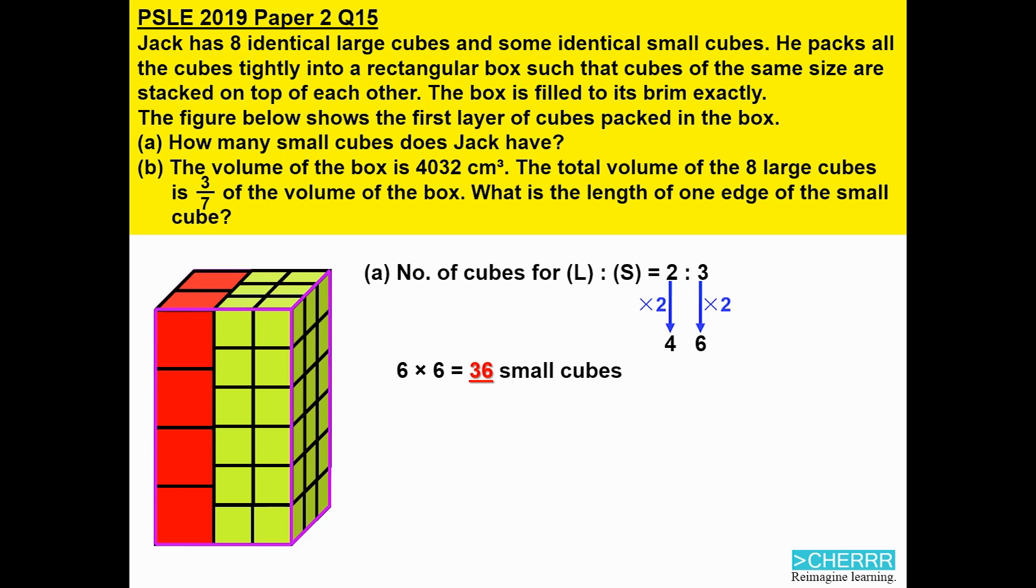Coming to Part B: Because the volume is 4032 and it is split into both the large and the small cubes, we can find the fractional part that belongs to the small cubes. We need to take one whole minus three-sevenths of the volume in order to get the fractional part for the small cubes. That would lead us to four out of seven.